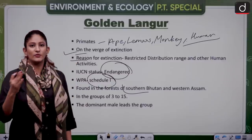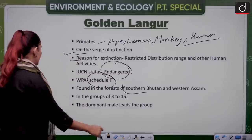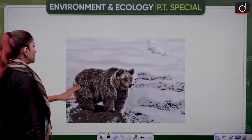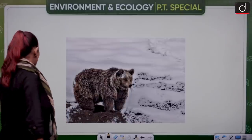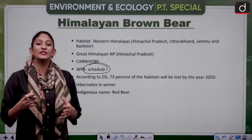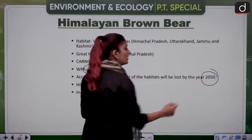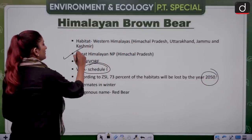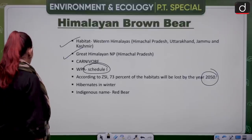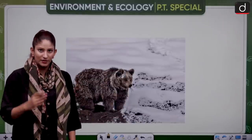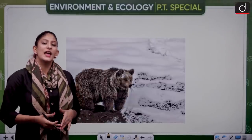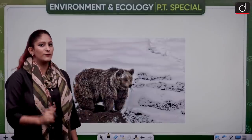The Himalayan brown bear is also known indigenously as the red bear. It is carnivorous and is under Schedule 1 of the Wildlife Protection Act. According to the Zoological Survey of India, 73% of their habitat will be lost by 2050. They are found in the Great Himalayas — specifically Western Himalayas in Himachal Pradesh, Uttarakhand, and Jammu & Kashmir. They hibernate in winter, sleeping in caves and surviving on stored body fat.